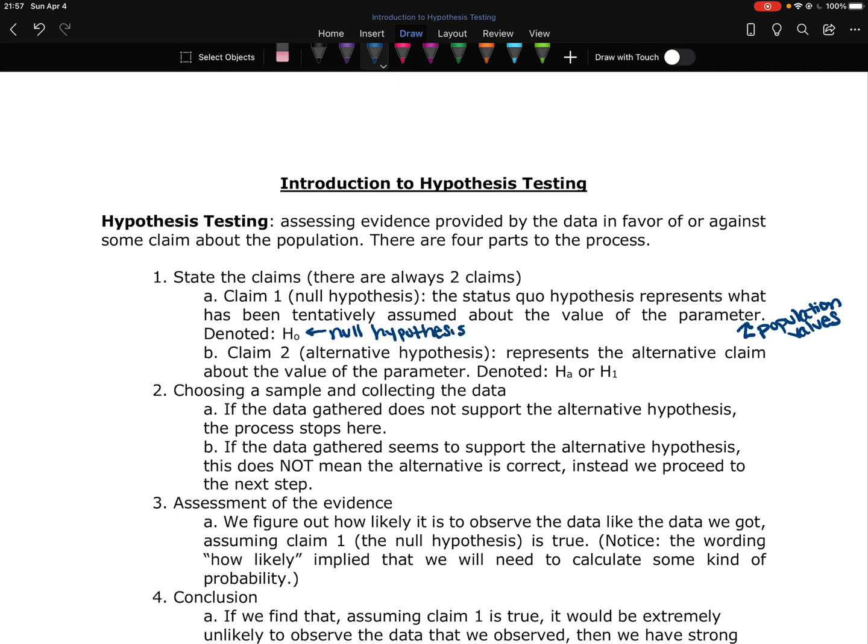The second claim is the alternative hypothesis. This represents the alternative claim about the value of the parameter. The alternative hypothesis is what you believe is happening. So when we talk about this alternative claim, this is what you as the researcher believe to be true.